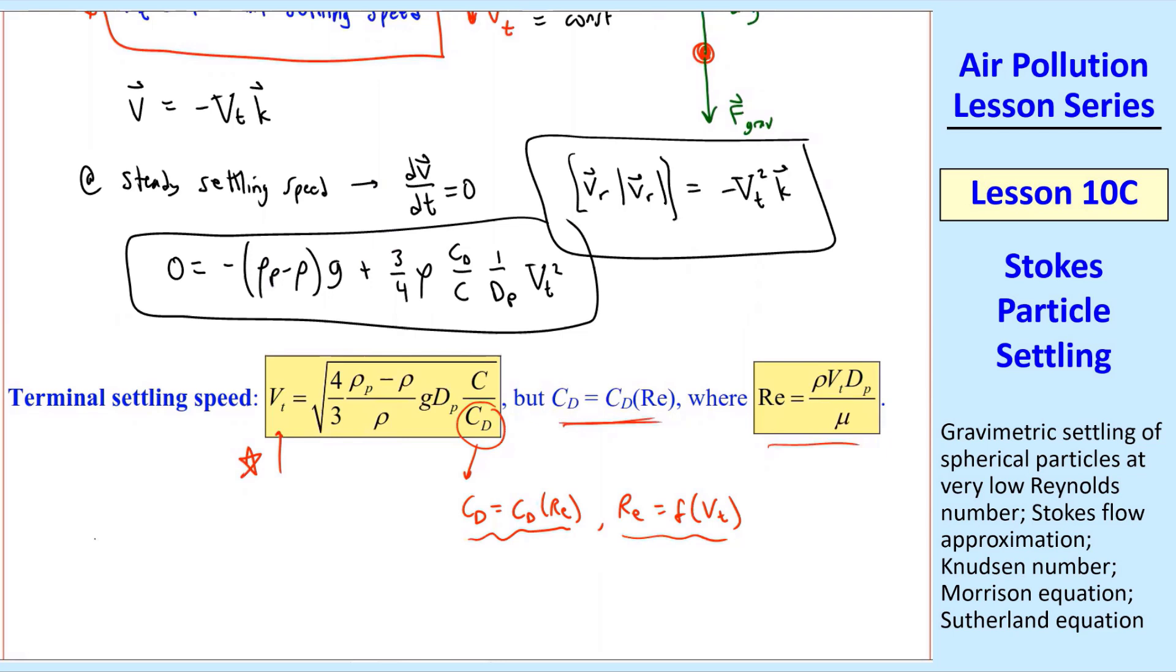And so this is what we call an implicit equation. You can't just solve vt equals and then plug in some numbers. vt is embedded inside that square root inside that cd equation.